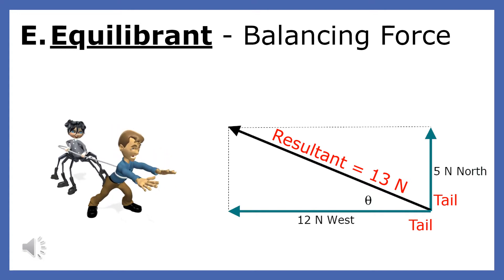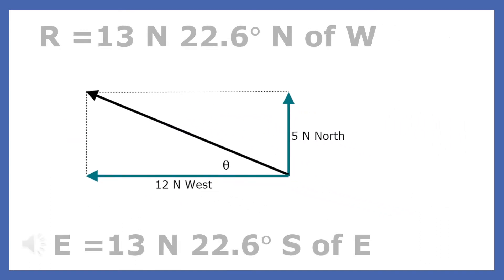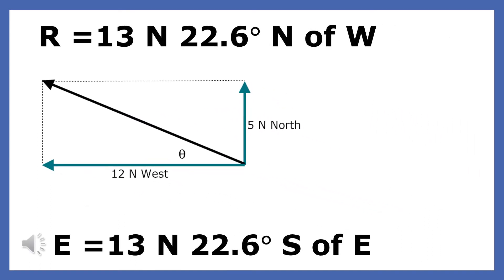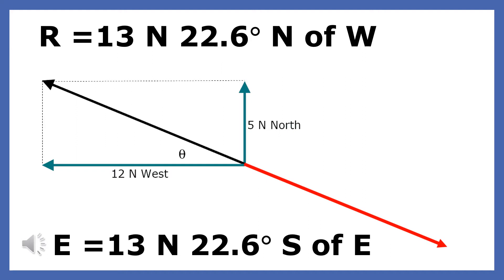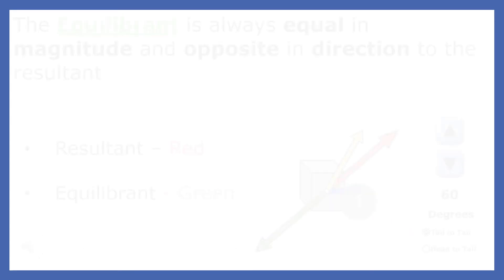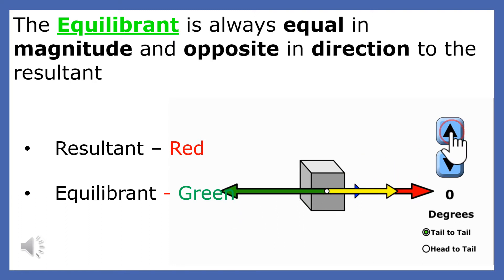Since the equilibrium is the single force that would balance two or more forces, what would the magnitude and direction of the equilibrium be? The resultant of these two vectors has a magnitude of 13 newtons and a direction of 22.6 degrees north of west. The equilibrium will always have a magnitude of 13 newtons but point in the exact opposite direction. The equilibrium has the same angle, but instead of being north of west, it is south of east.